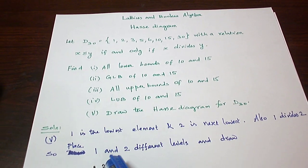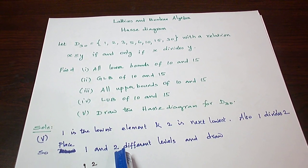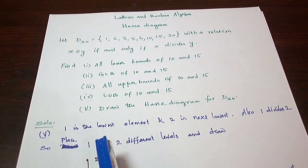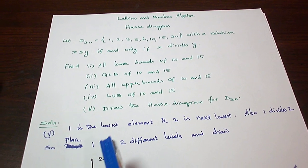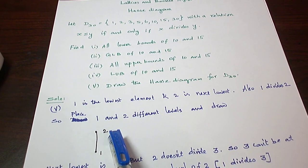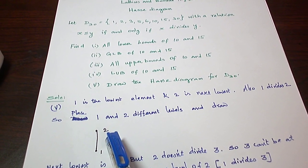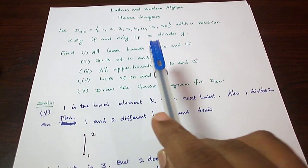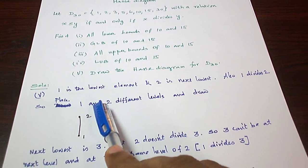The least element is 1. Next least element is 2 and 1 divides 2, so place 1 at the lowest level, 2 at the next level and draw a line between them. Next least element is 3.